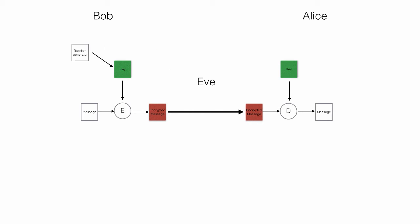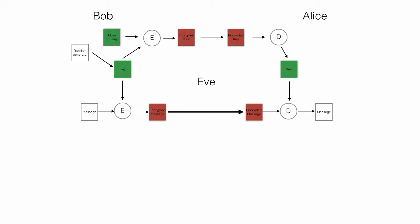So what Bob does is create a random key for encrypting the message. With a random key long enough he can be sure that Eve cannot read the apple pie recipe. The only problem is that neither can Alice, because she does not have the random key either. So Bob encrypts the random key and sends it over to Alice. For encrypting the symmetric encryption key, Bob uses Alice's public key.